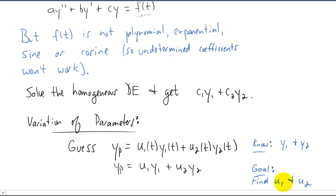So in variation of parameters, we always know what y1 and y2 are because we can get them really easily from the homogeneous DE. And the goal is to figure out what u1 and u2 are so that we can multiply all this stuff together and figure out our particular solution to our differential equation. That's variation of parameters.